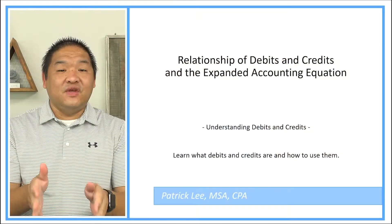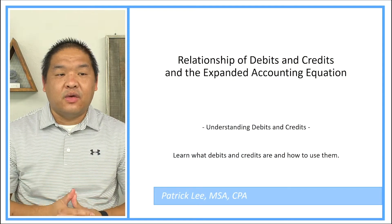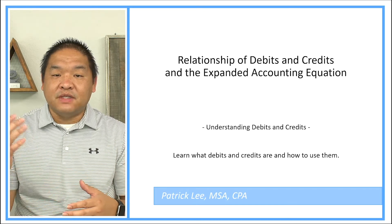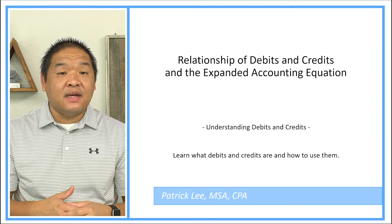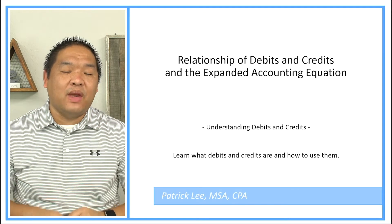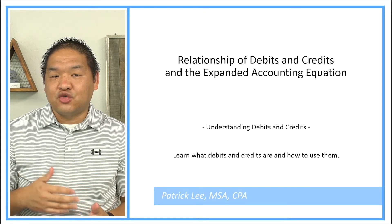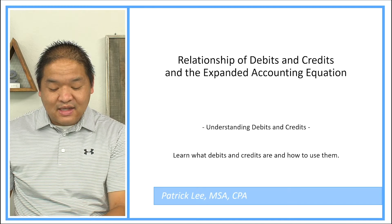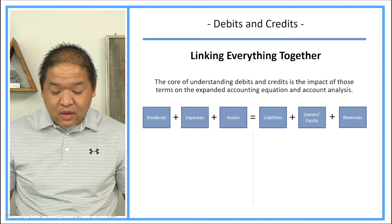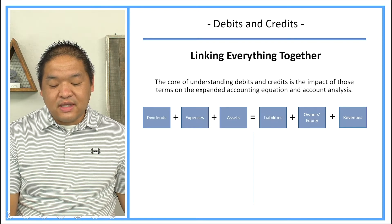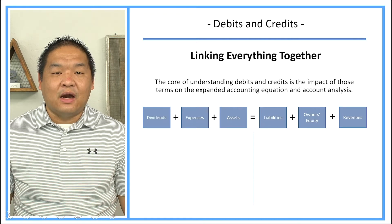Until then, let's get going with your lesson. In the last few lessons, we've been talking about the expanded accounting equation. We talked about debits and credits. Now we're going to bring them all together and understand the relationship of debits and credits — left or right — and the expanded accounting equation DEALER, and how they come together to help us understand how we actually use debits and credits from a journal entry standpoint. The core of understanding debits and credits is the impact of those terms on the expanded accounting equation and account analysis.